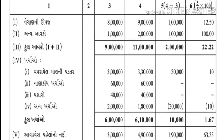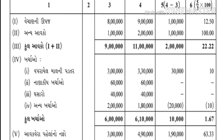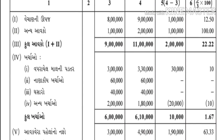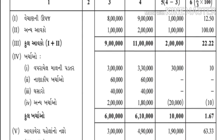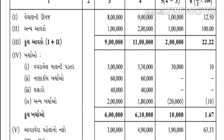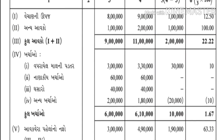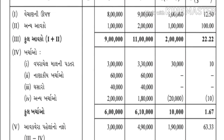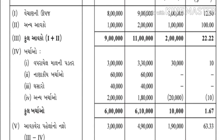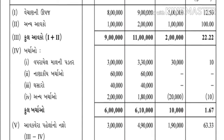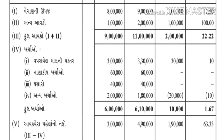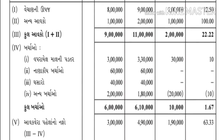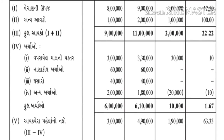ચારે ખર્ચાઓનો સરવાળો કરશો તો 2016ની અંદર આપણને સરવાળો મળે છે 6 લાખ. આવકો જે છે - પ્રથમ - એમાંથી આપણે કુલ ખર્ચાઓ - જે બીજું સ્ટેપ છે - એ બાદ કરશો, એટલે આપણને શું મળી ગયો?